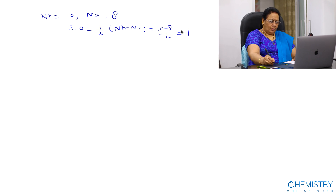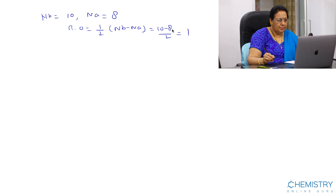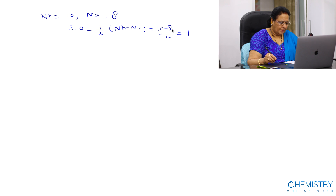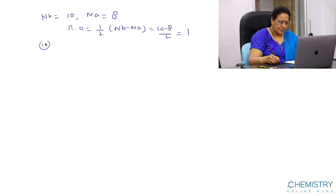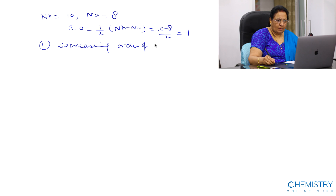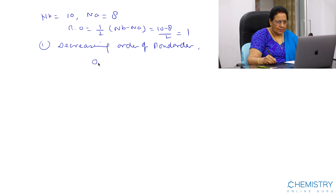Now we can find important points using the bond order values. One important point is the decreasing order of bond order: O2+ > O2 > O2- > O2(2-).